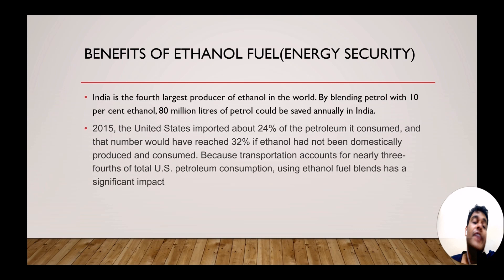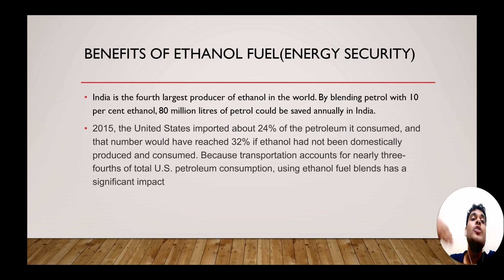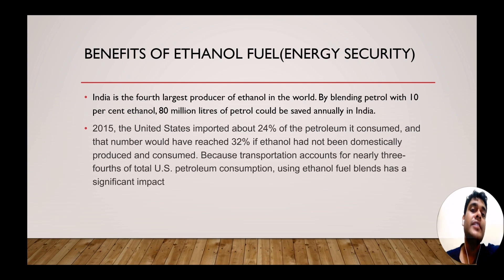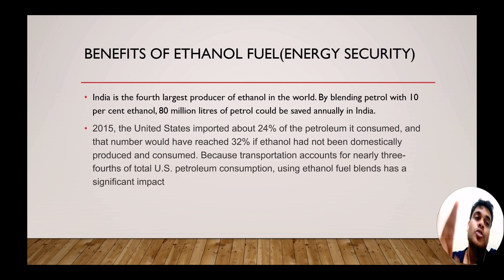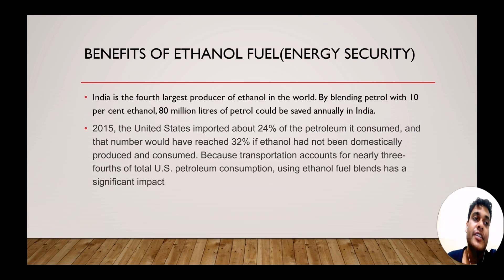Even in the United States in 2015, the United States imported 24% of the petroleum that it consumed. And if the United States would not have been using ethanol blending in its fuel, then it would have had to import 32% of the petroleum that it consumed. So obviously, blending gasoline with ethanol in the USA restricted its imports to 24% of what it consumed. If the USA would not have used ethanol blending, then it would have imported 32% of the petroleum that it used. So obviously, it is a big saving.